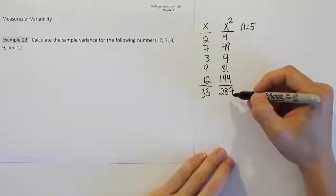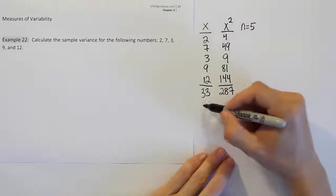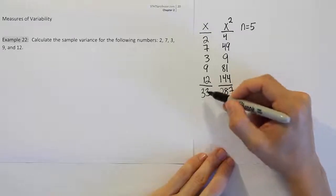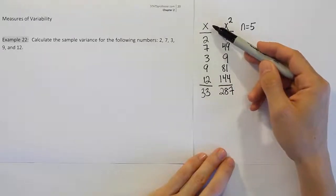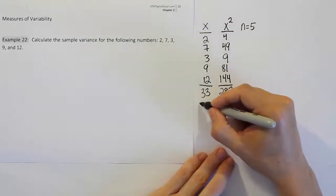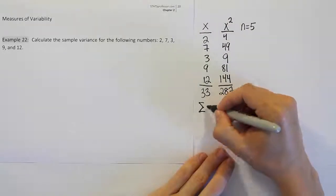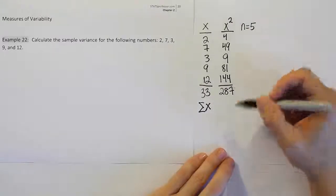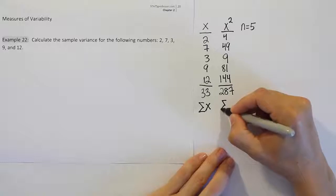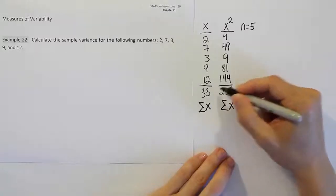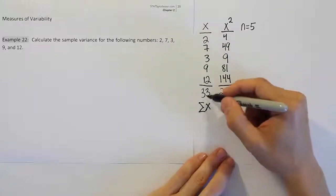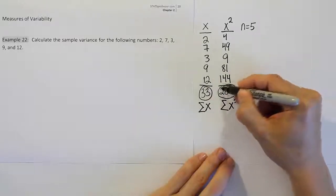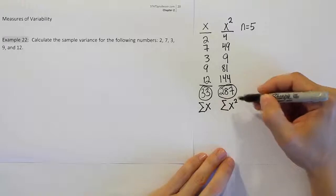Now, our next step is going to be to take these numbers that we have and we're going to give them names. So what would you call this 33? It came from adding up this column. So it came from doing the sum of x. And this column was x squared. So this number would be the sum of x squared. So we've basically given these numbers names. 33 is the sum of x and 287 is the sum of x squared.